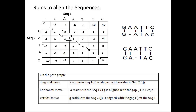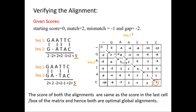Following the second path: a diagonal arrow aligns G with G, then A with A. A horizontal arrow indicates a residue in sequence 1 is aligned with a gap in sequence 2, followed by diagonal arrows aligning the remaining residues. To check whether both are optimal alignments, we score them again using the given scores. Both alignments produce a total score equal to the value in the last cell of the matrix, proving that both are optimal alignments.